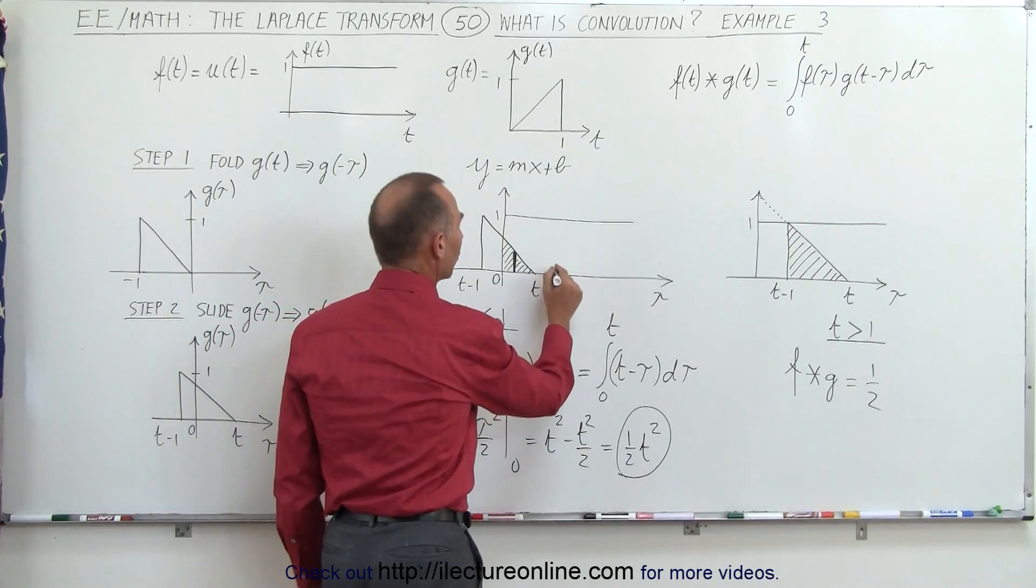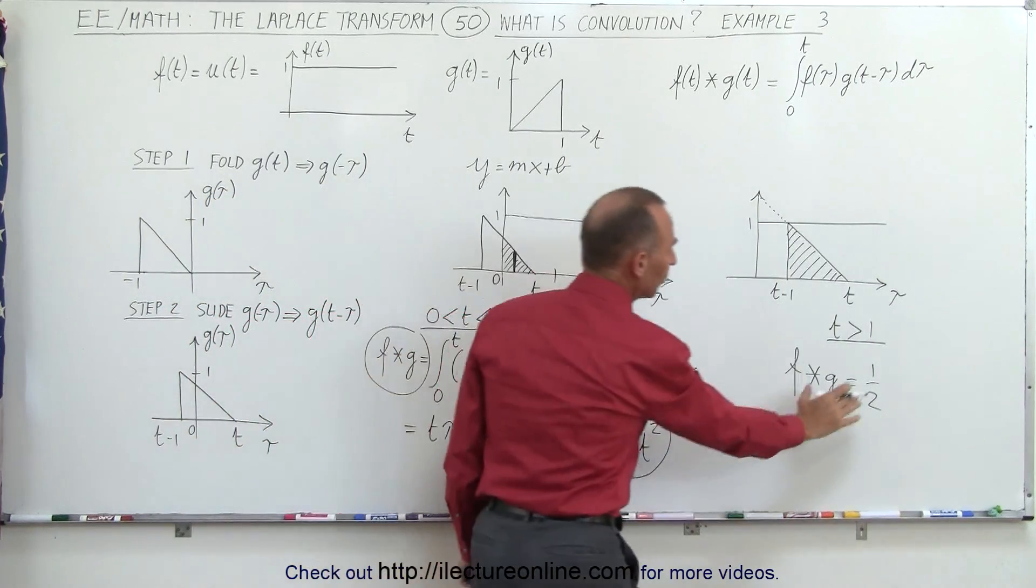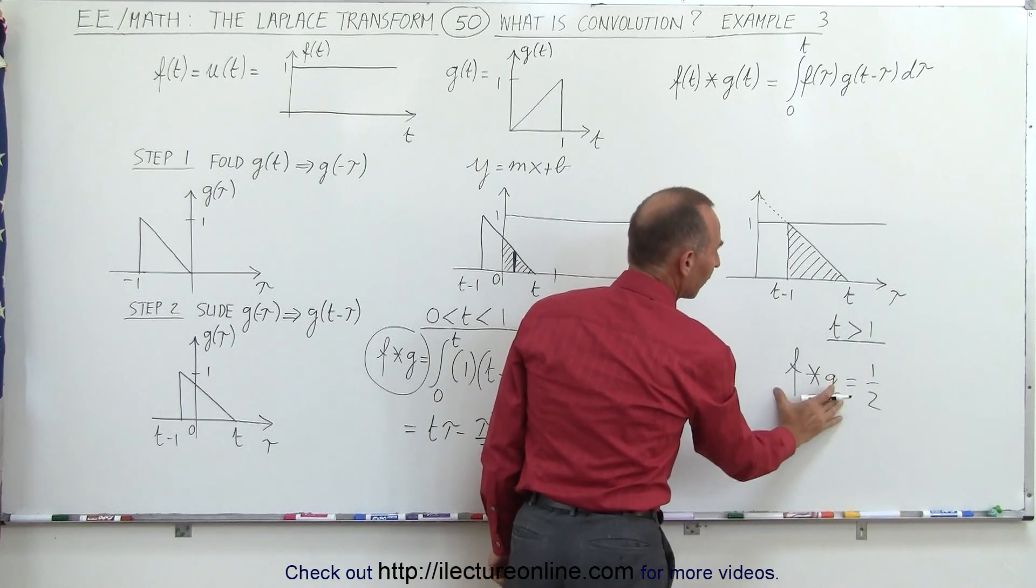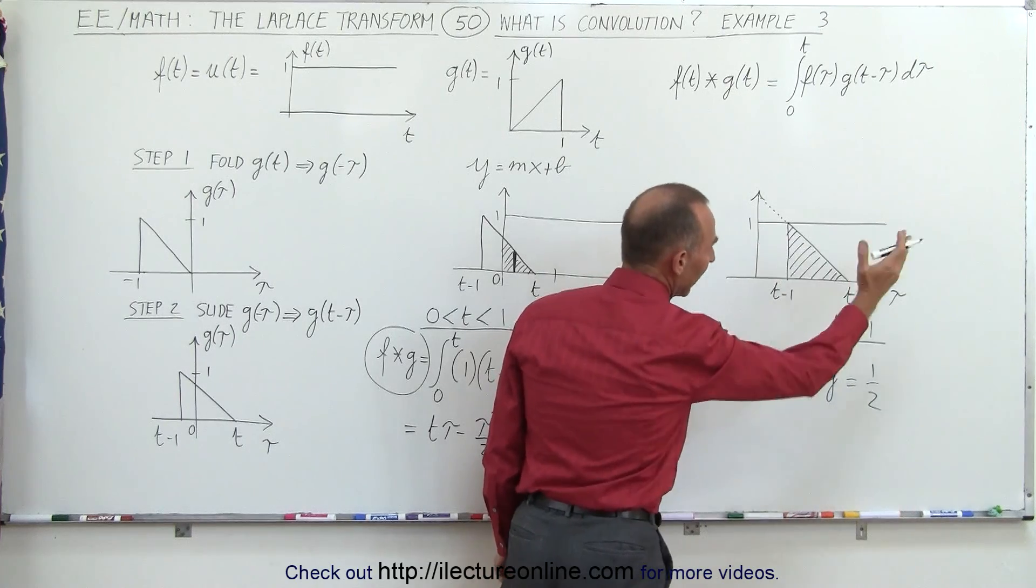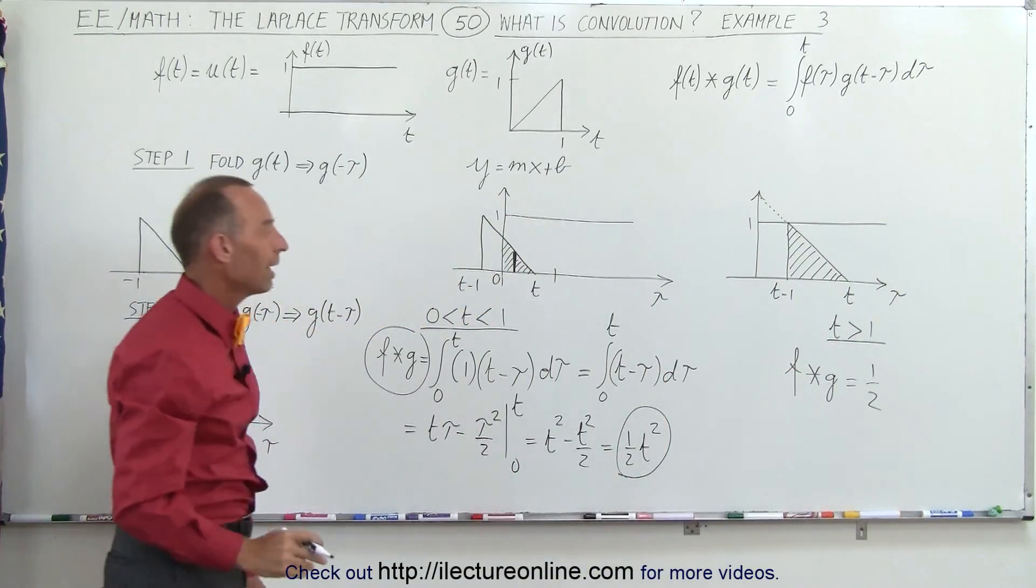Once t gets to be past 1 and beyond, at that point, for t greater than 1, the convolution is simply equal to 1 half. 1 times the area of the triangle, and that would be equal to 1 half.